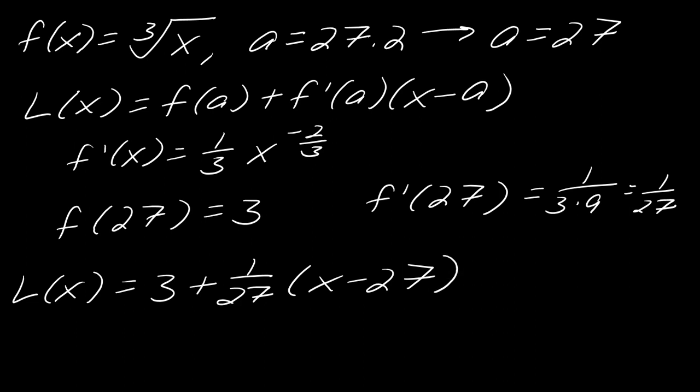So I've got L of x is going to equal 3 plus 1 over 27 times x minus 27. So that works out pretty nicely. So then my line in this case will be 3 plus 1 over 27 x minus 1. And so then this comes out to 2 plus 1 over 27 x. Okay, so there's kind of my approximation.